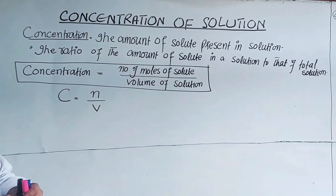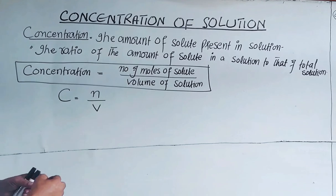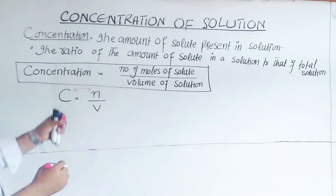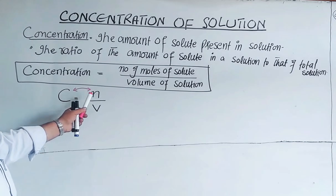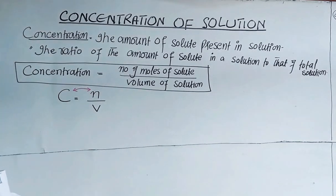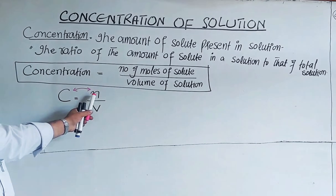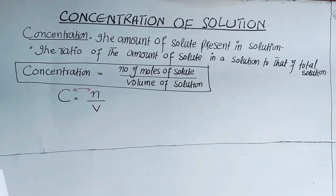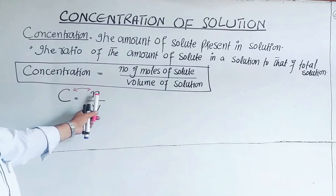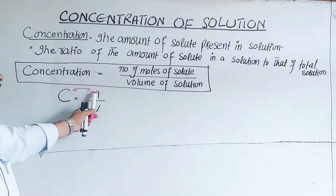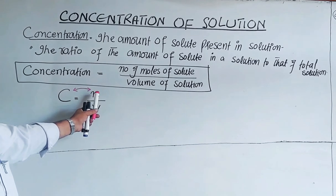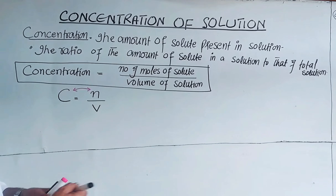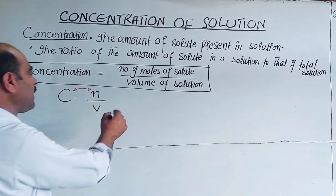Since volume is kept constant, the concentration and the number of moles have a direct relation. There is a direct relationship between the number of moles of solute and concentration of solution. Greater the amount of solute in the given solution, higher will be the concentration of that solution. And lesser the number of moles of solute present in the solution, lower will be the concentration of the solution.